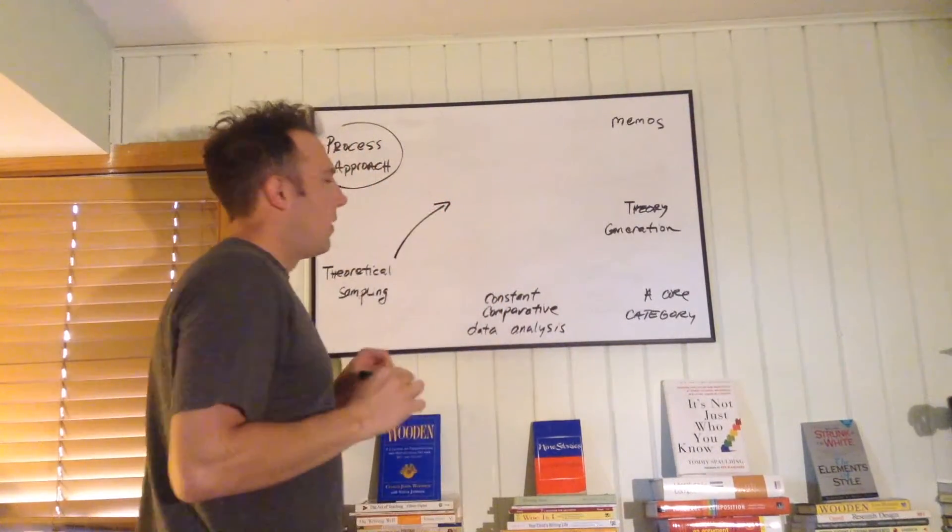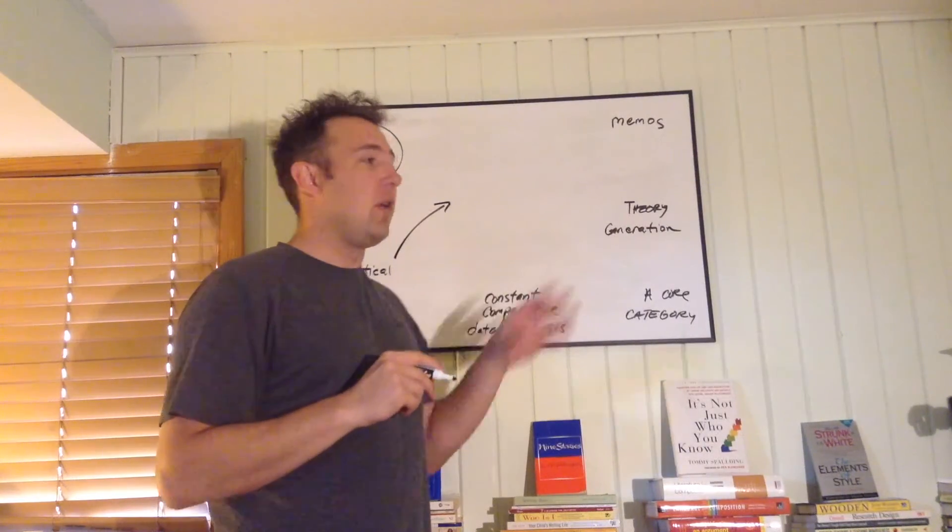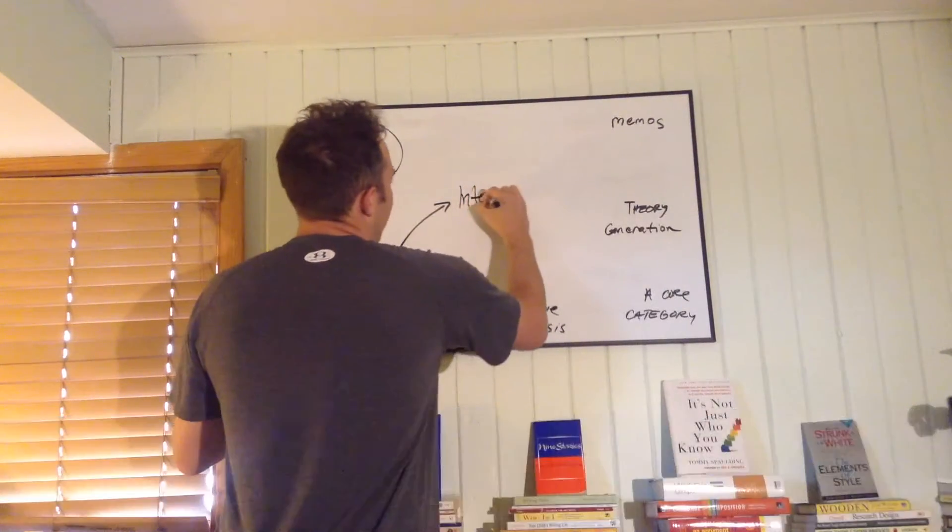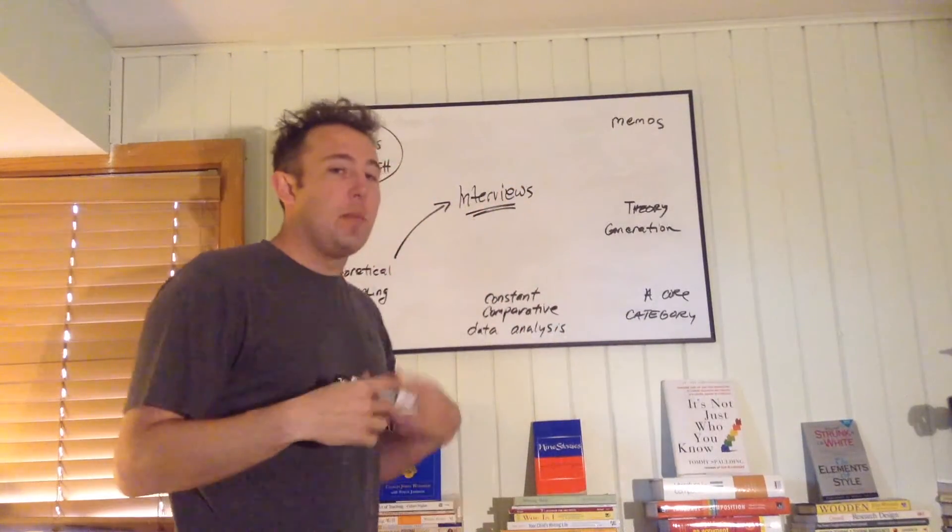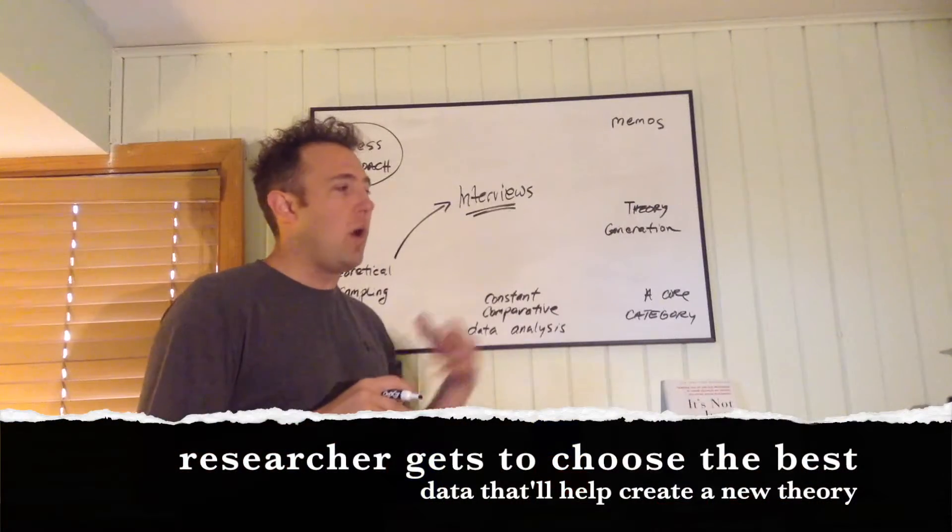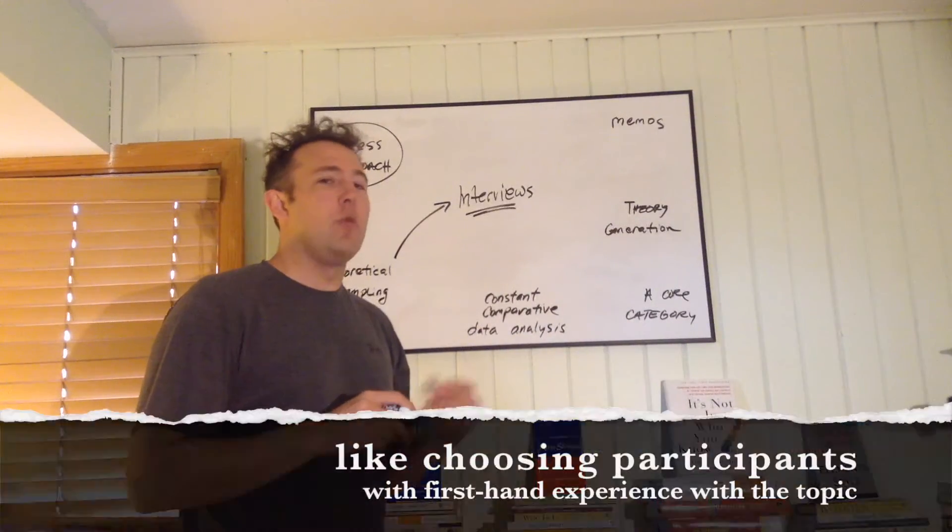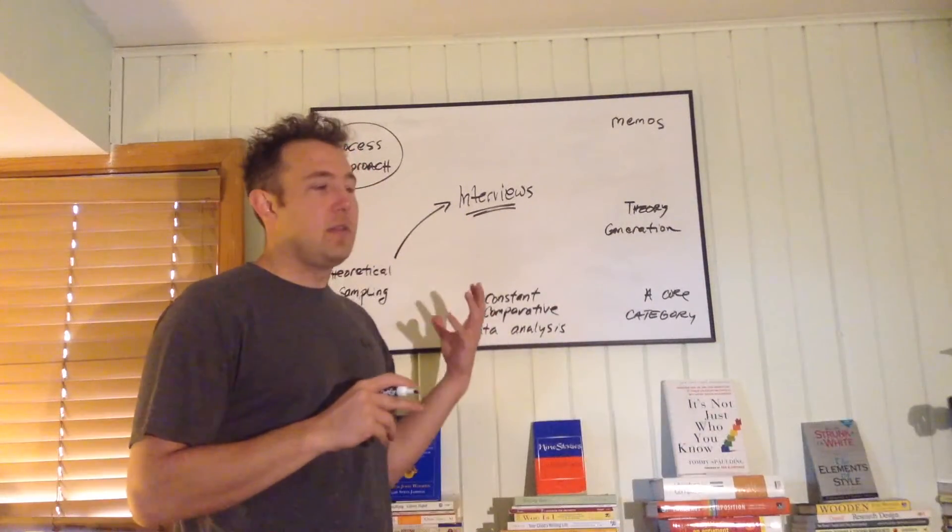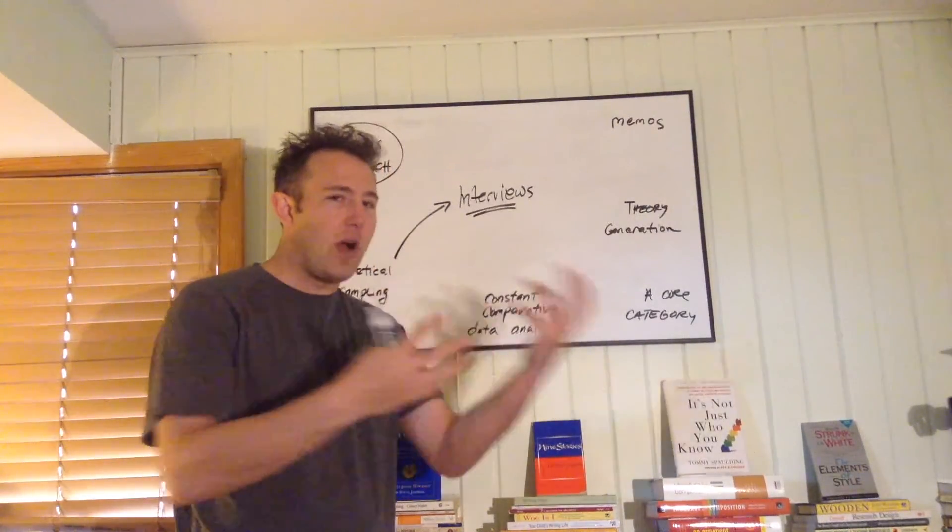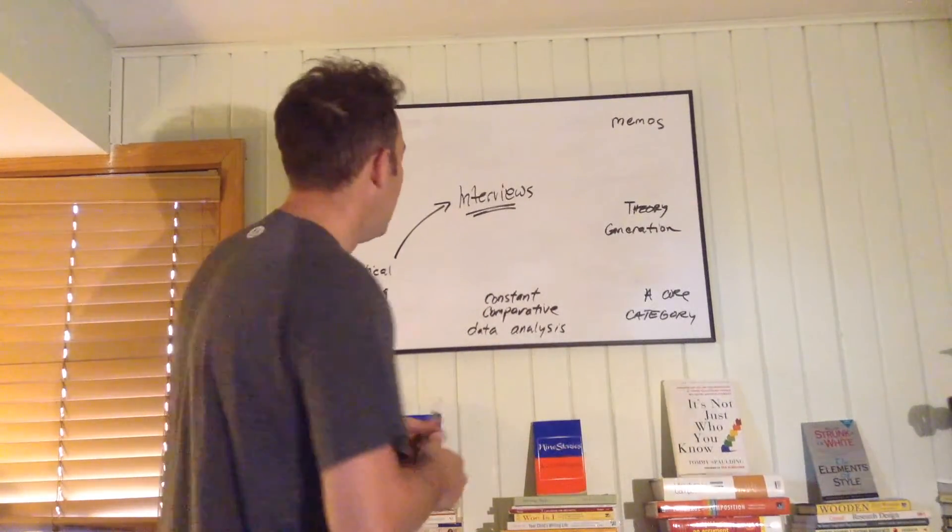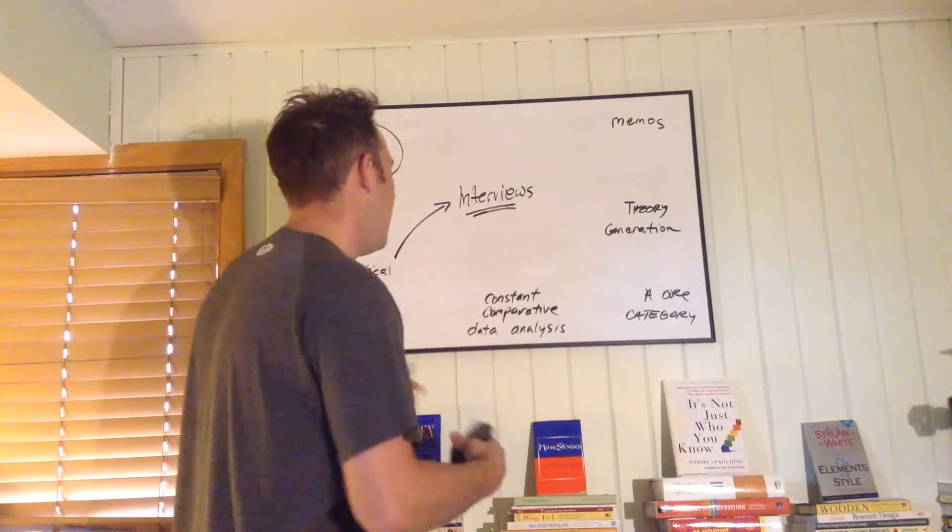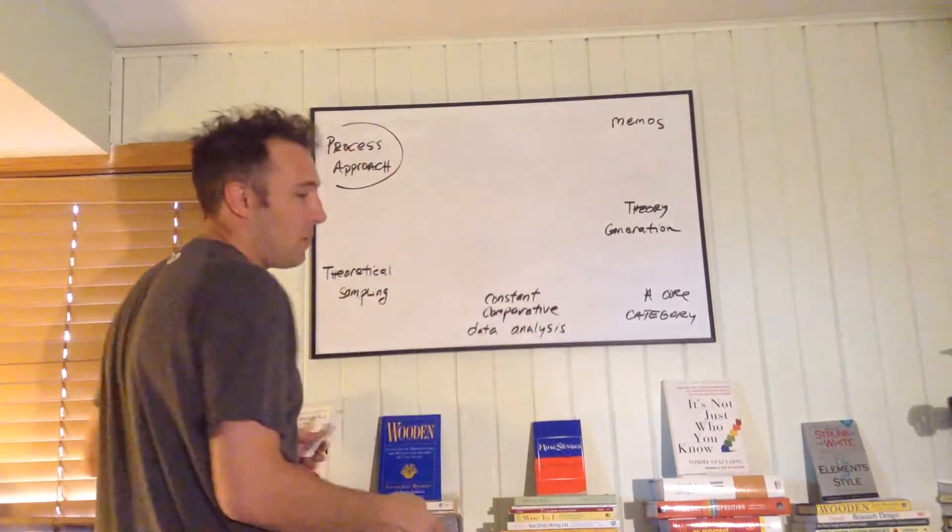The next is theoretical sampling. A grounded theory researcher has access to all qualitative means of gathering data. However, interviews seem to be the primary means to collect data. And I think that's because that is where we want our theory to come from. We want our theory to come from participants, and we want it to emerge from them and the interactions that they have. So if I was studying us, I would study how we each interact with this process of balancing work, play, and studies. So interviews, but you can also do public records, you can also do document analysis, all sorts of anything, surveys, things like that. Anything that a qualitative researcher can use, a grounded theory researcher can use as well.